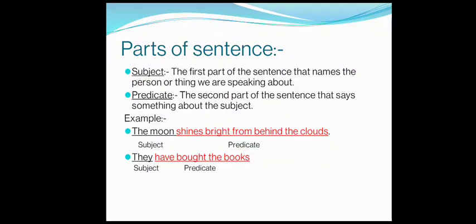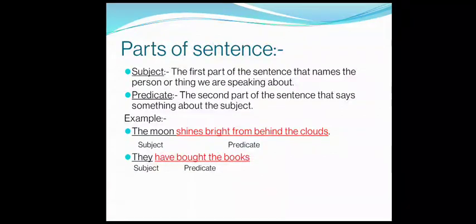Now let us talk about the second part of the sentence, known as predicate. The predicate is the second part of the sentence that says something about the subject. Basically, everything other than the topic of the sentence is considered as predicate, or in simple words, the activity which is performed by the subject is considered as predicate. For example, in 'The moon shines bright from behind the clouds,' the main topic is the moon, and the activity — shines bright from behind the clouds — is the predicate.